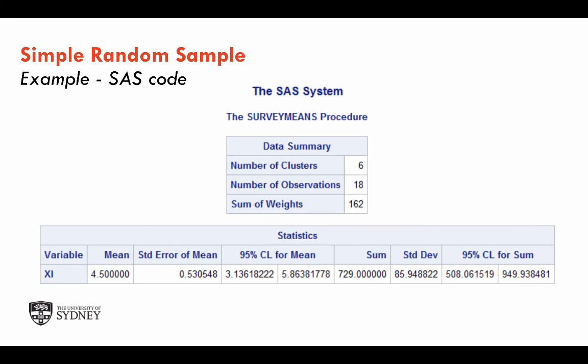You should obtain a mean of 4.5 days lost per employee, or a total of 729 days lost, along with the respective confidence intervals.